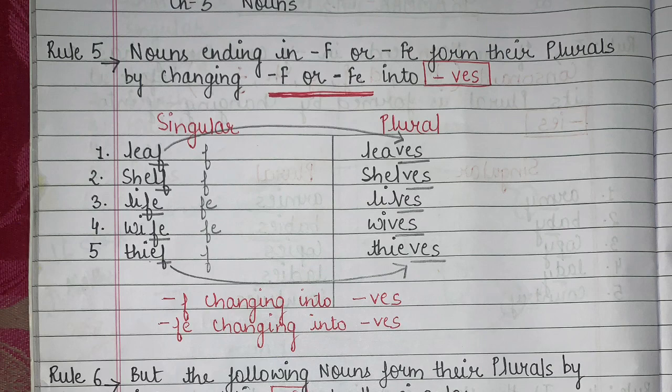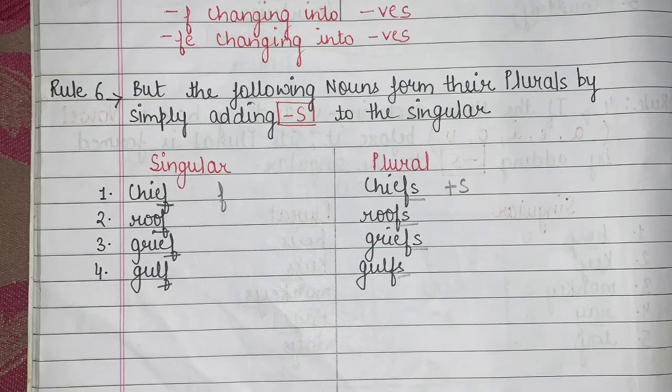Now let's proceed further. Rule number 6 says: but the following nouns form their plurals by simply adding S to the singular. So now I have certain words here with me. When I have to change these nouns into plurals, I just add S towards the end. Let's see what these exceptions are. When I have chief, it can be changed into plural by just adding S — so chief becomes chiefs.